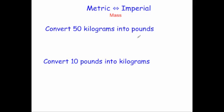Convert 50 kilograms into pounds. One kilogram is approximately equal to 2.2 pounds, so to convert 50 kilograms into pounds, you're going to times by 2.2. So 50 times 2.2—when you times 50 by 2.2, you get 110 pounds. That means 50 kilograms is approximately equal to 110 pounds.